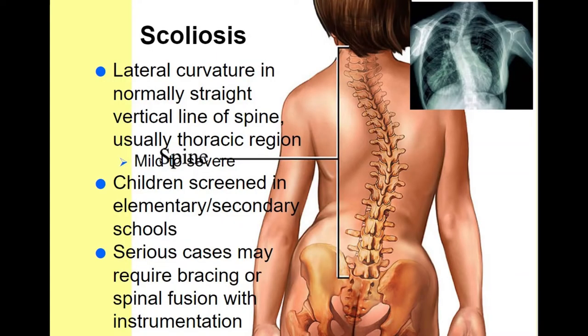Scoliosis is a lateral curvature in the normally straight vertical line of the spine, most evident in the thoracic region. Children are usually screened in elementary and secondary schools and during annual pediatric physicals. Serious cases may require bracing or spinal fusion — some clients have metal rods in their backs to stabilize the spine. Think of scoliosis as starting with an S, which is most frequently the shape of the spine with this condition.